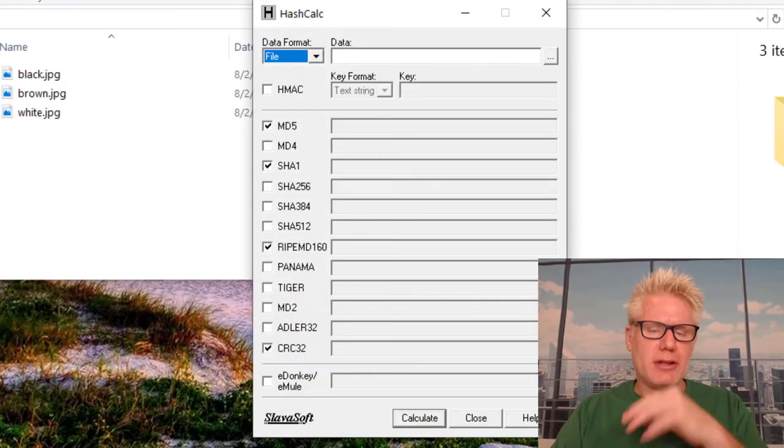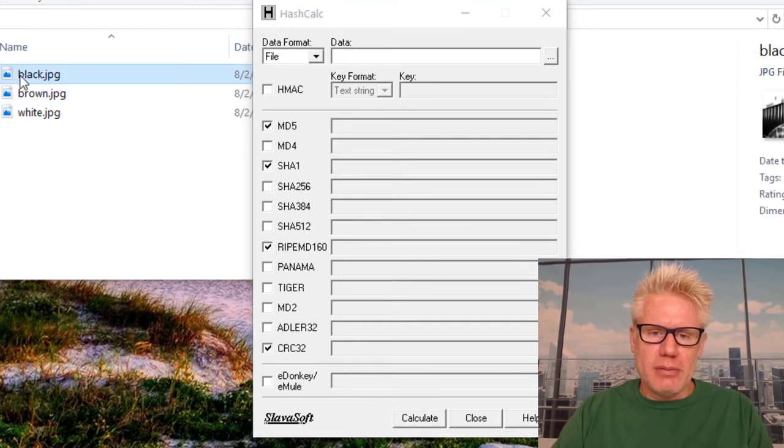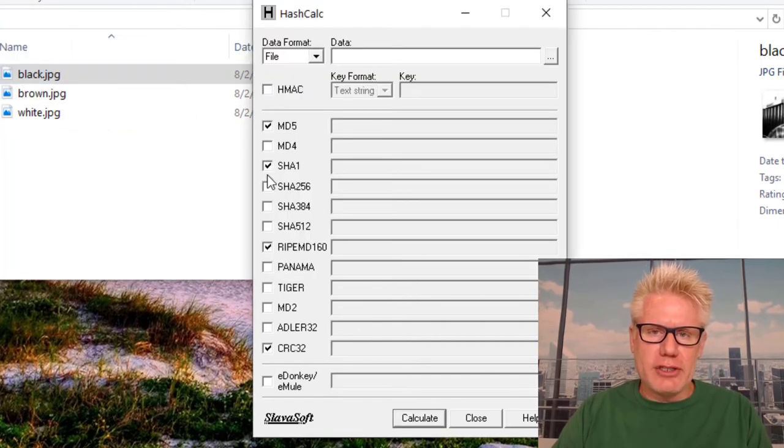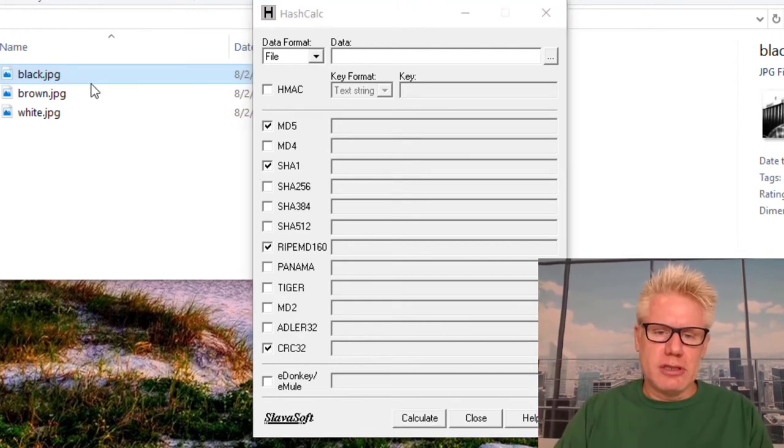So here's hash calc. I'll put the link to hash calc in the video. And with hash calc, you can just drag and drop the image. So here is black. I'm going to drag it over here. And I've got, before I do that, I've got MD5 selected. And I've also have SHA-1 selected. So we'll do the message digest for both of those algorithms. So there's black.